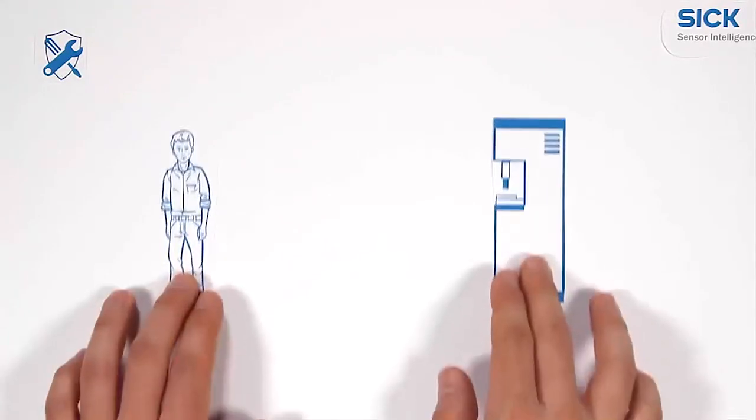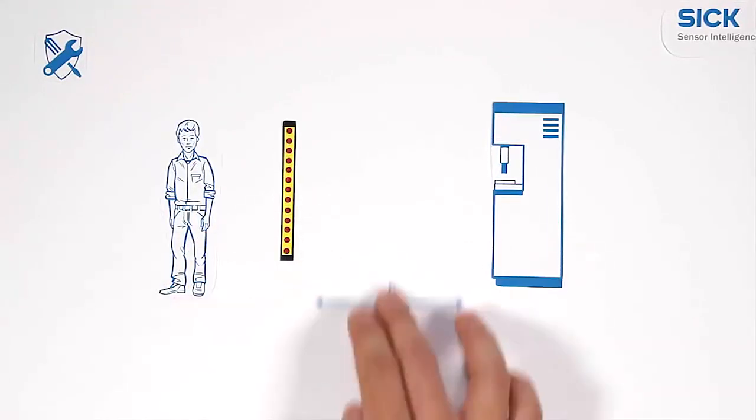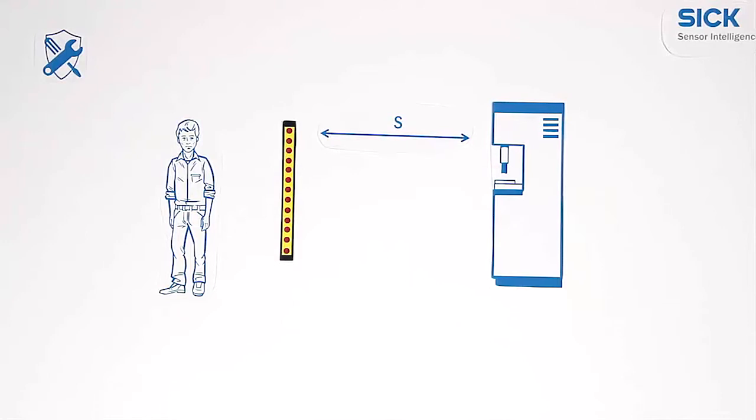For a correct installation, the minimum distance between the machine and the active optoelectronic protective devices is crucial. It can be determined with this formula.